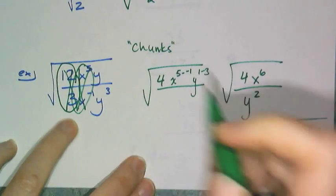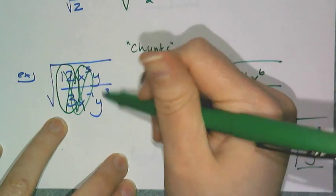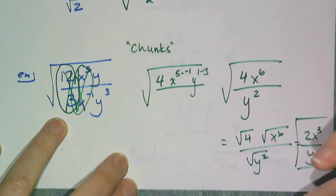Now if you wanted to, you could have totally taken this and made it the square root of 12, the square root of x to the fifth, the square root of y, square root of 3, square root of x to negative 1, square root of y cubed, but why?